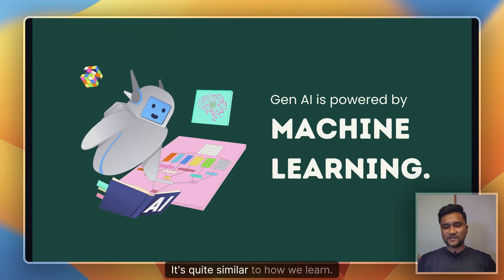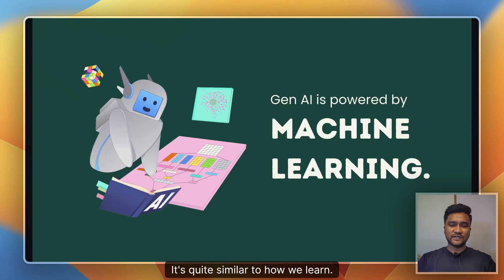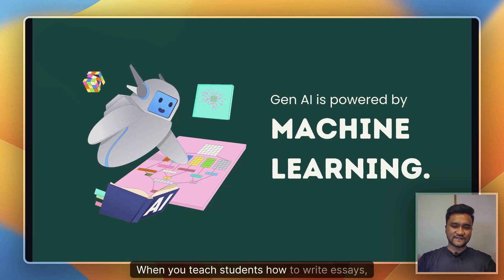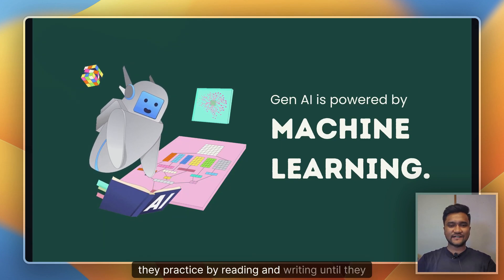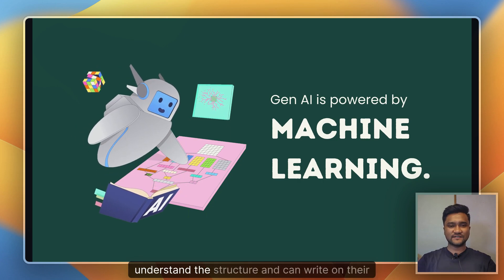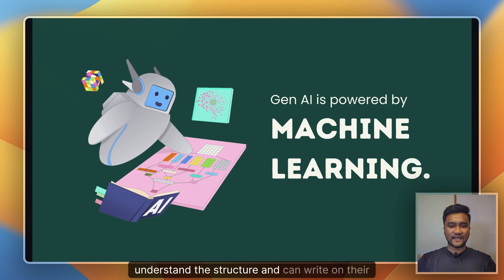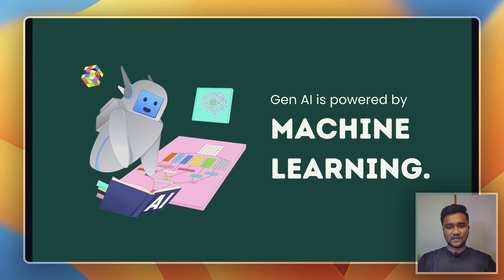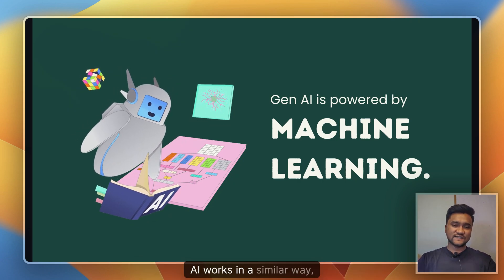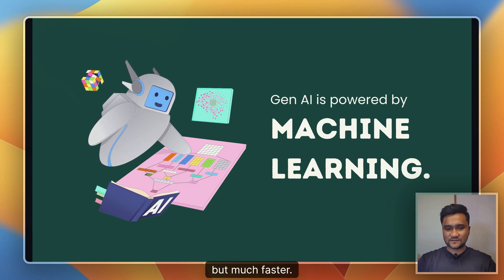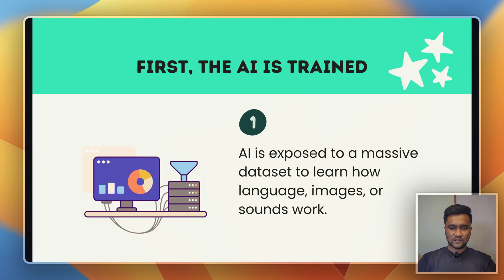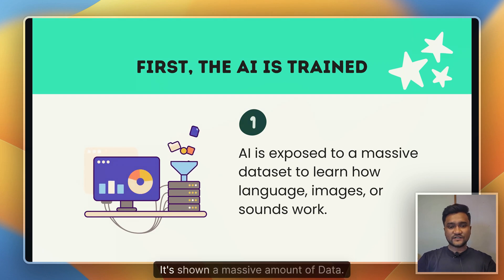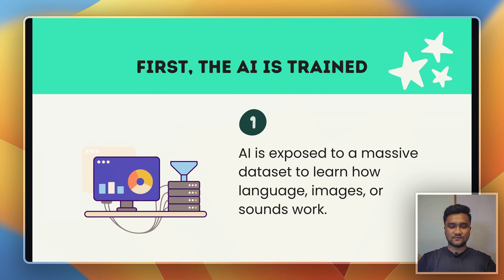It's quite similar to how we learn. When you teach students how to write essays, they practice by reading and writing until they understand the structure and can write on their own. AI works in a similar way, but much faster. Here's how it works in three steps. First, the AI is trained — it's shown a massive amount of data.